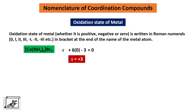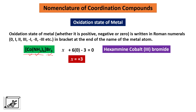Now we write the full name of Co(NH3)6Br3. First, we name the positive part and then the negative part. Inside the square bracket we name the ligands first — there are six ammonia groups, so we write hexaammine — then the central metal atom cobalt with its oxidation state. The name is hexaamminecobalt(III) bromide. Even though there are three bromide atoms outside the square bracket, it is written simply as bromide — not dibromide or tribromide.